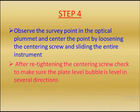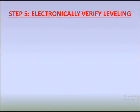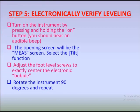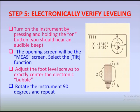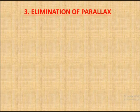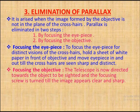Step four: electronically verify leveling. With the help of the keyboard, the total station is digitally leveled. The last step of temporary adjustment is elimination of parallax. Parallax is eliminated in two steps: first by focusing the eyepiece, and second by focusing the objective.